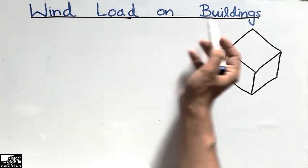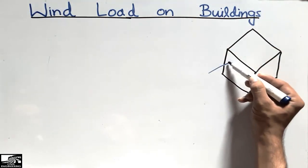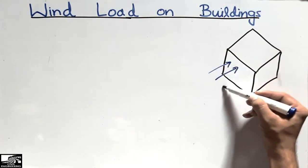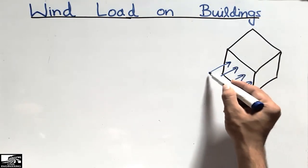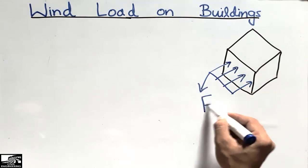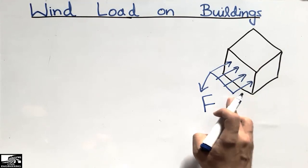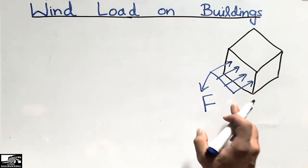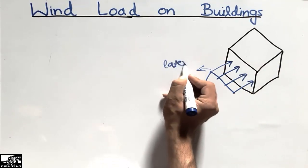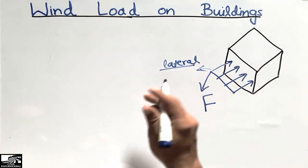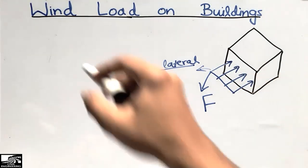To find the wind load acting on the building, let's consider a building with wind load acting on it in the horizontal direction. We are going to find how much load is acting on this building. This load is also sometimes called the lateral load, because it acts in the sideways direction on the building.